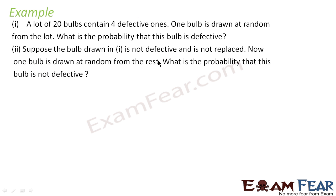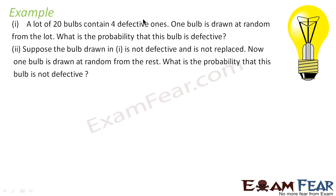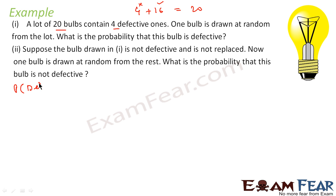A lot of 20 bulbs contains 4 defective and 16 good bulbs. A bulb is drawn at random from this lot. There are 20 total bulbs — 4 defective and 16 good. One bulb is taken out at random and we have to find the probability that the bulb is defective.